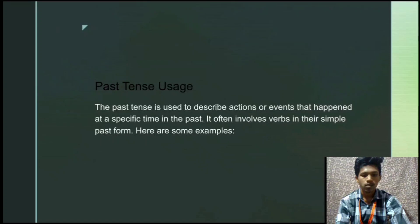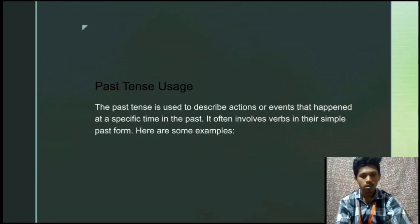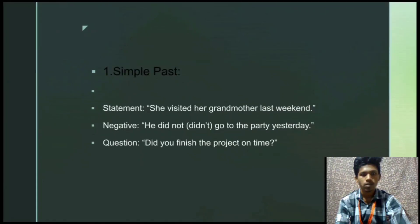What we discuss about the past tense usage: the past tense is used to describe actions or events that happened at a specific time in the past. It often involves verbs in their simple past form. Here are some examples for the types of past tenses: simple past, past continuous, past perfect, and past perfect continuous.